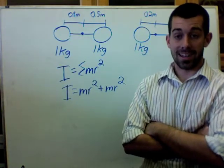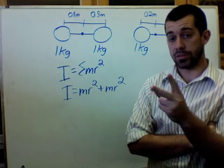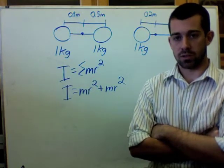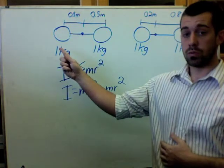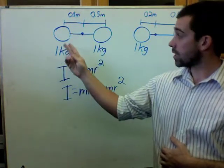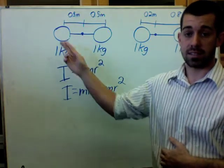Okay, here are two examples that we're going to use to solve for rotational inertia. In both examples, we have two 1 kg masses connected by a massless rod.